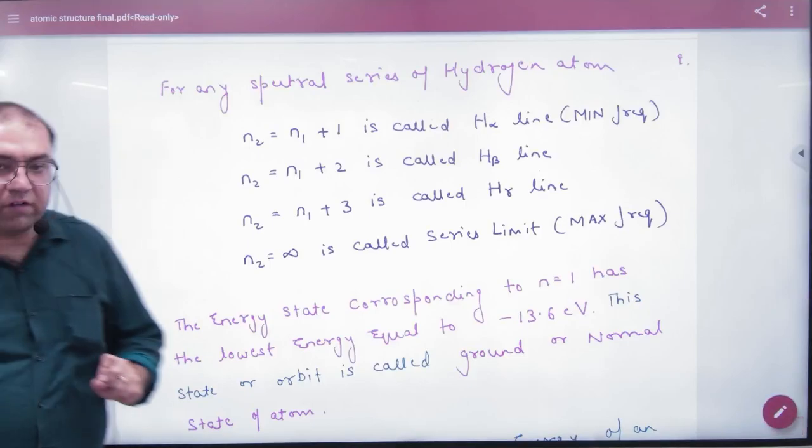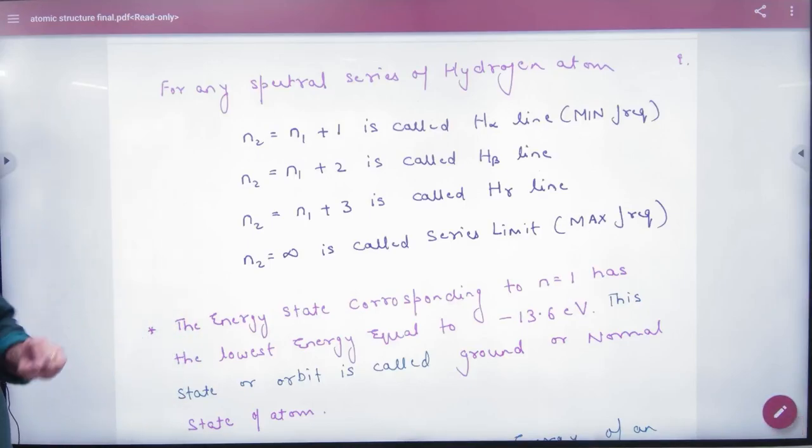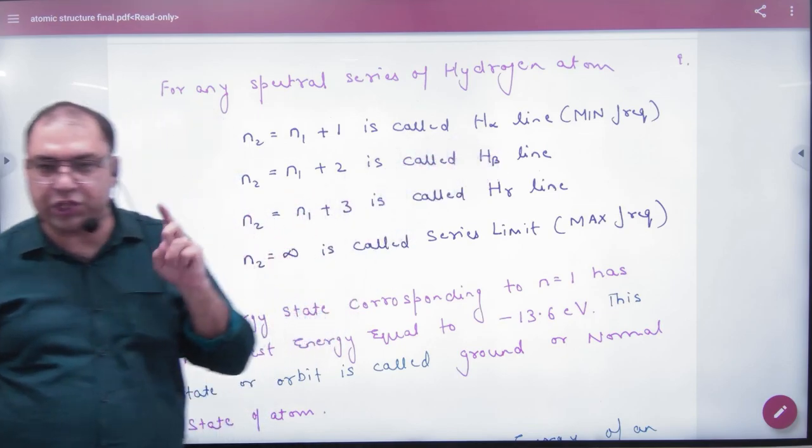In spectral lines of hydrogen atom, if it comes to the objective or numerical, we discuss the H-alpha line.